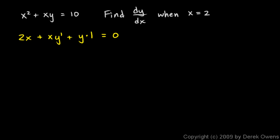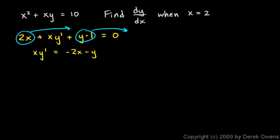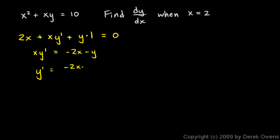Doing a little algebra: x times y prime equals negative 2x minus y — moving those two terms to the other side, where they become negative. So y prime equals negative 2x minus y, over x.